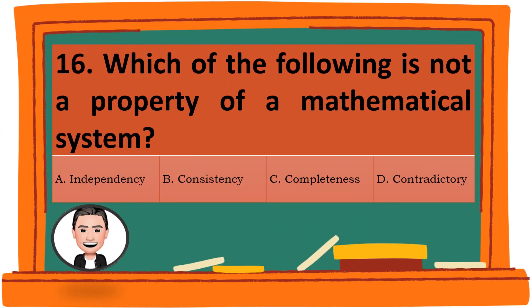Question 16. Which of the following is not a property of a mathematical system? A. Independency. B. Consistency. C. Completeness. D. Contradictory. The correct answer is D. Contradictory.